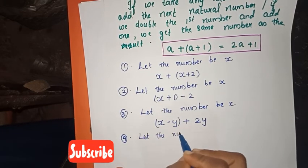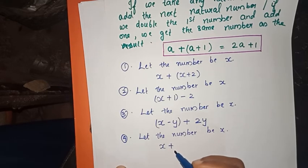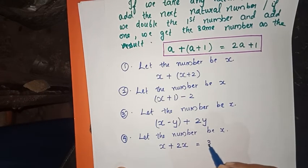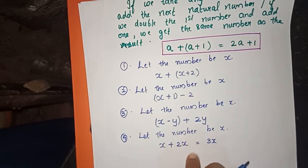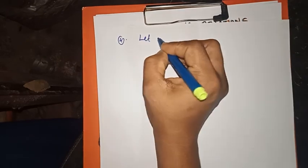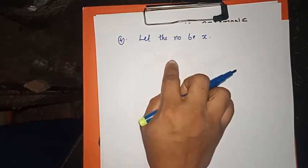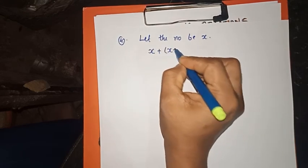Let the number be x. Add the number to double itself: x plus 2x gives 3x. We get 3x. For the 4th question — add two consecutive natural numbers: let the numbers be x and x plus 1. Their sum is x plus (x plus 1), which equals 2x plus 1, or written as 3x plus 1.